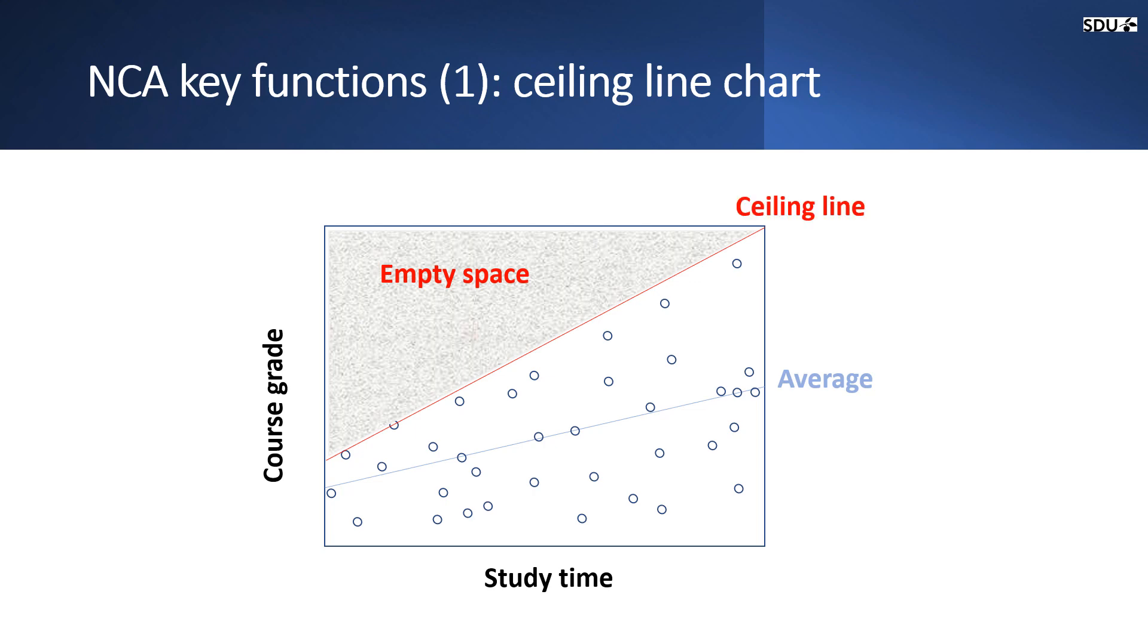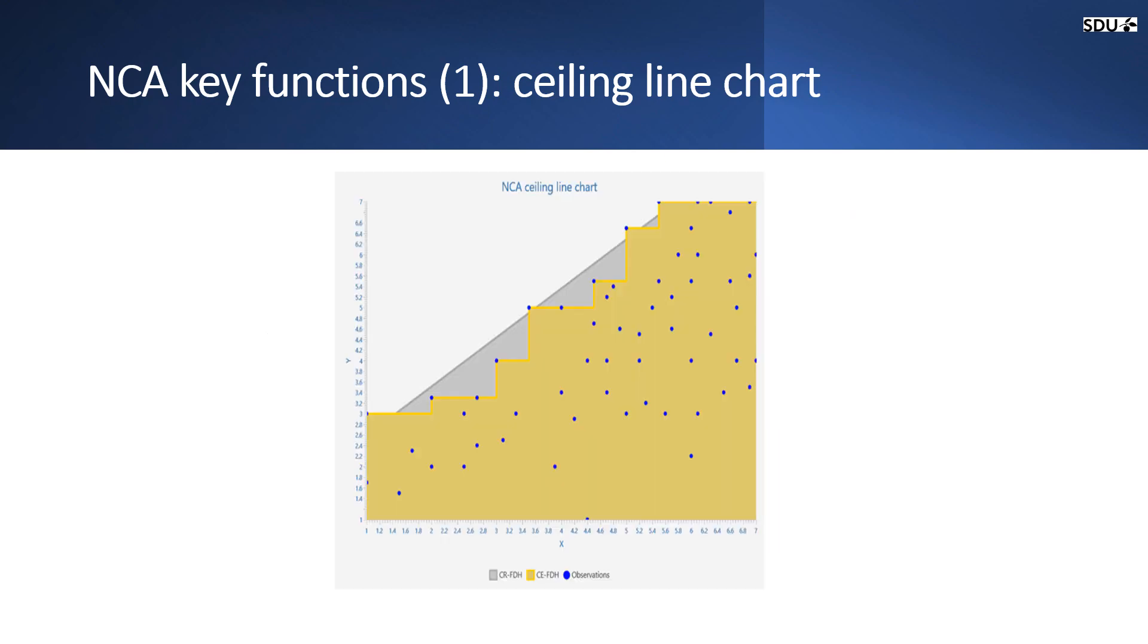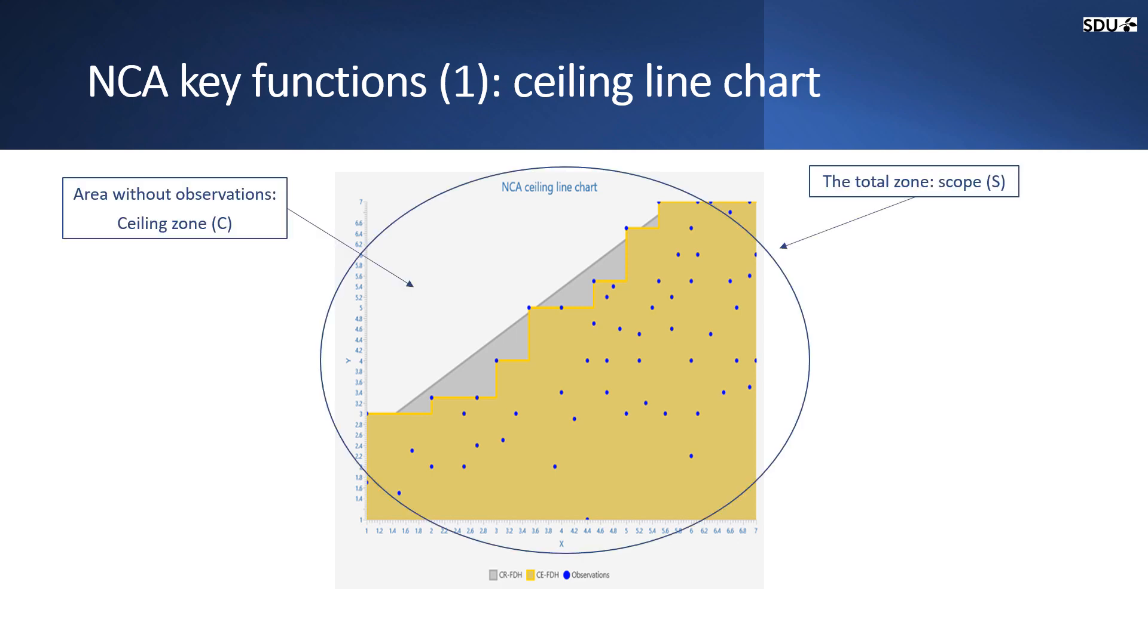Here this line on top of the data is called a ceiling line. Let's see more about this chart. This is a screenshot of the ceiling line chart from SmartPLS 4. The total zone here is called a scope and the area without observation is called the ceiling zone.